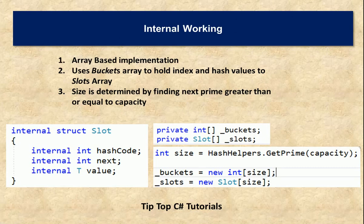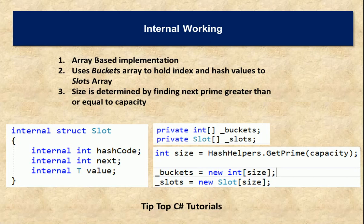We have a bucket array and a slot array, and they are initialized such that their sizes are the same. The size is calculated by finding the next prime number greater than or equal to the capacity. For example, if you initialize a HashSet without providing any capacity, the capacity will be zero and the next nearest prime will be calculated, which is three.